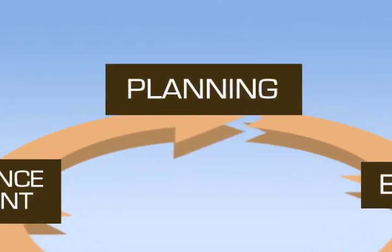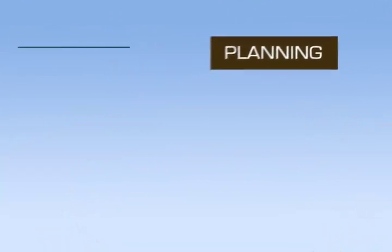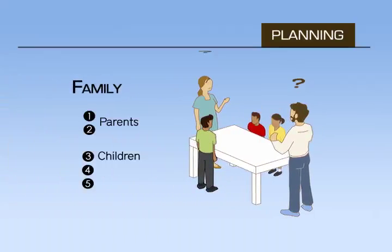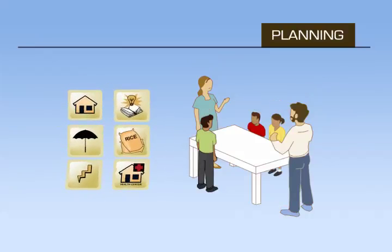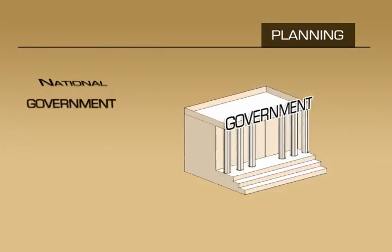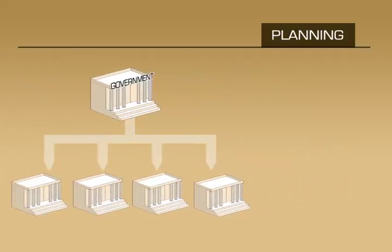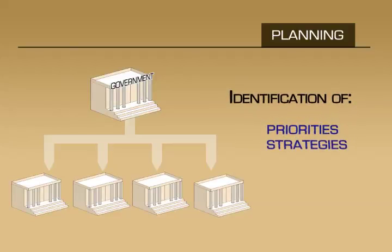In the planning stage, household family members regularly plan their expenses for efficient spending and to ensure that their needs are adequately addressed. In a country, this process is undertaken by the national government yearly and at the local level at more regular intervals. The planning stage involves the identification of priorities, strategies, policies, and programs.